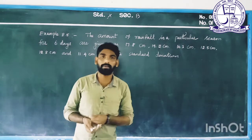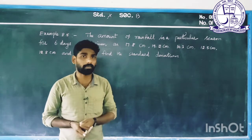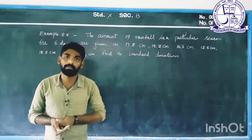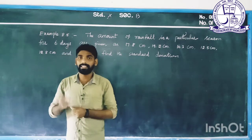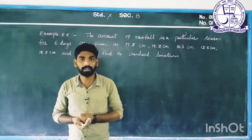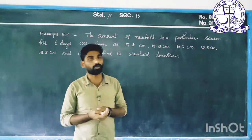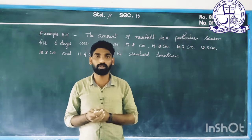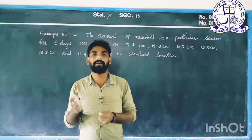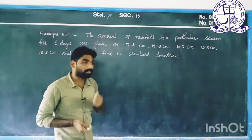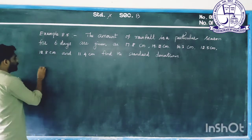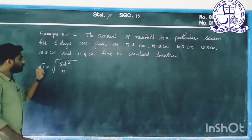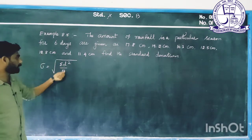For standard deviation, we have the direct method and the mean method. In the mean method, we find x̄ — that is, x bar — which is the mean. We add all observations and divide by the number of observations to get the mean. The formula is: sigma is equal to square root of summation d squared by n. This is the mean method formula.